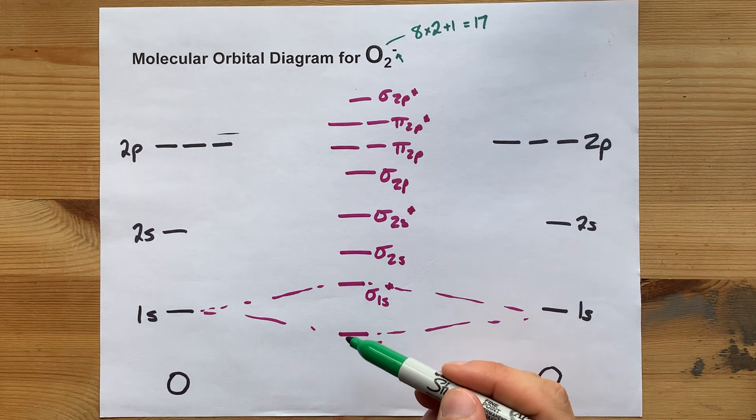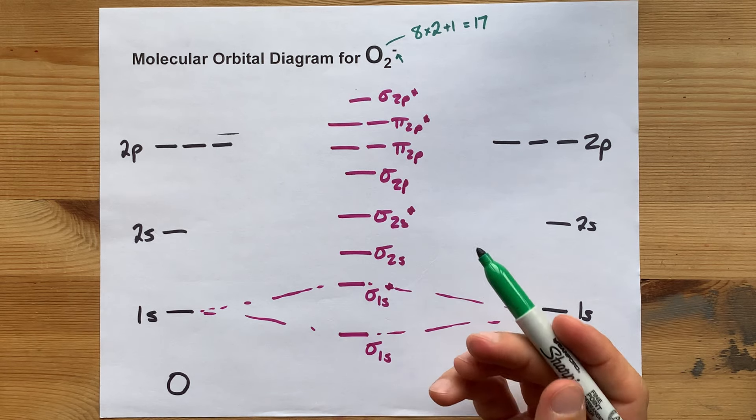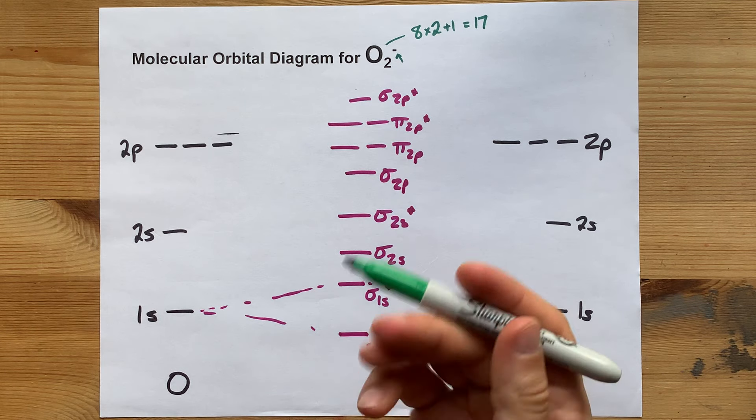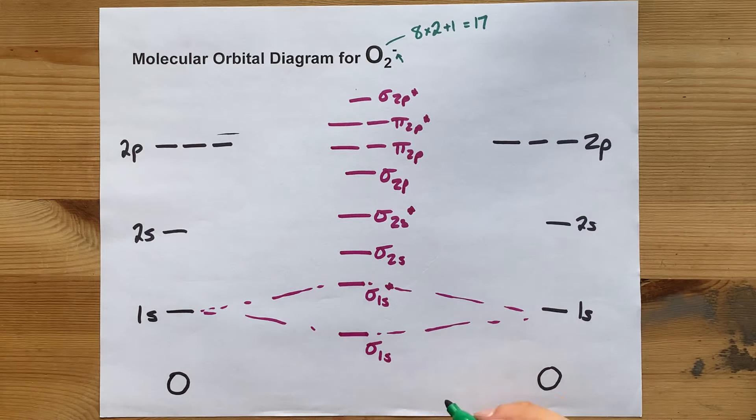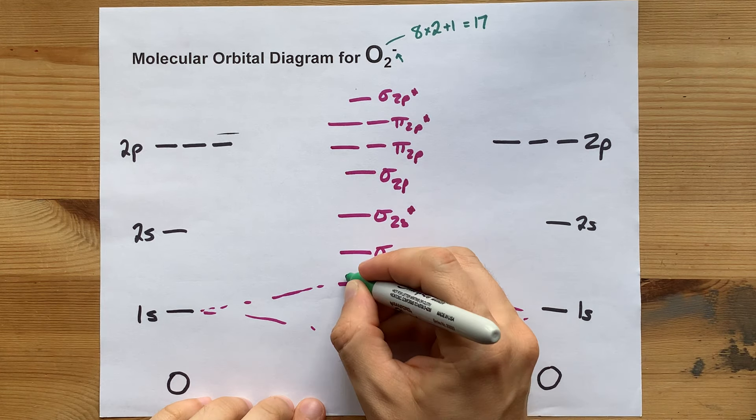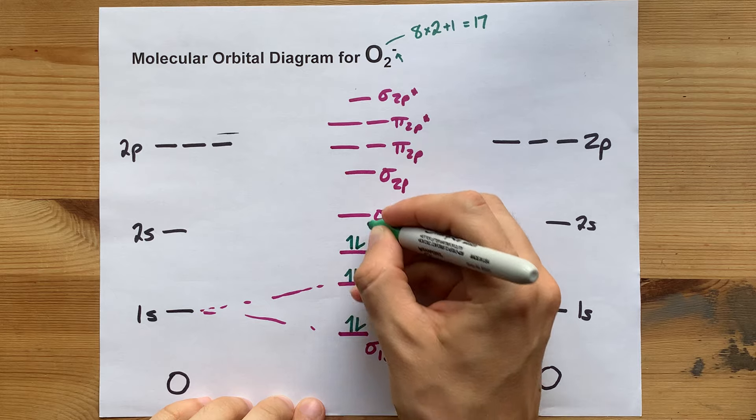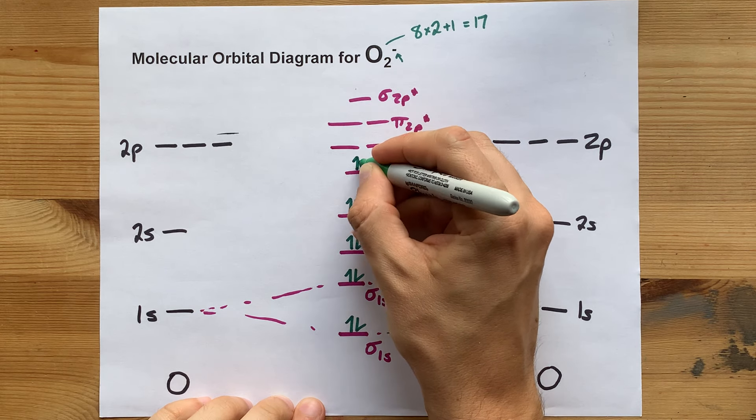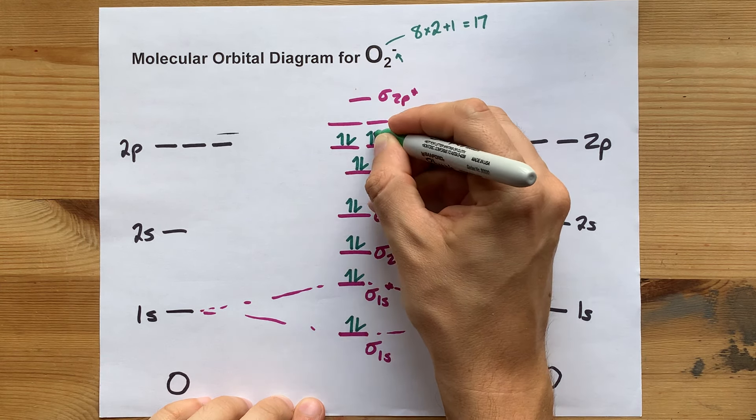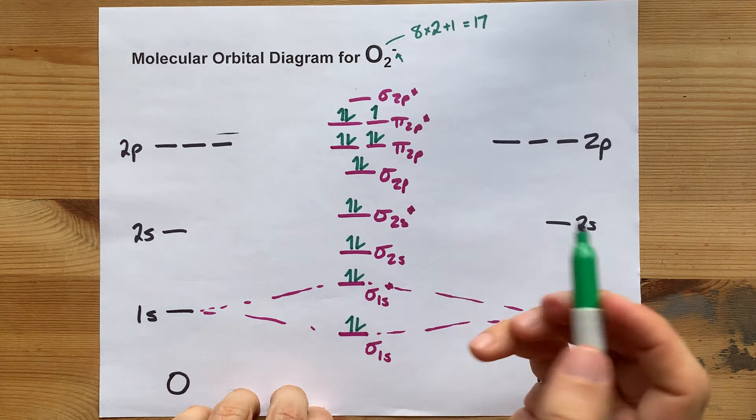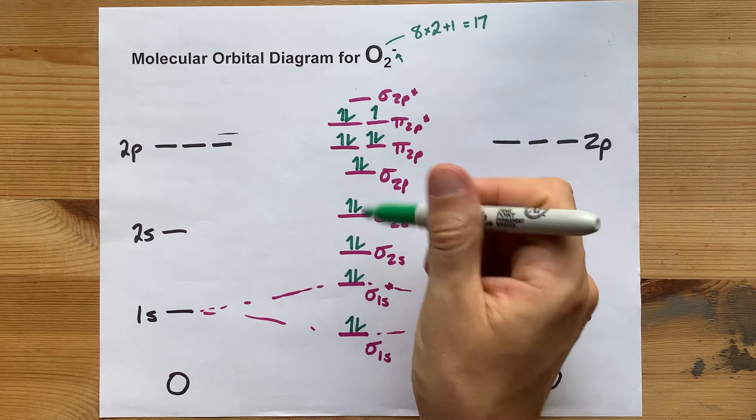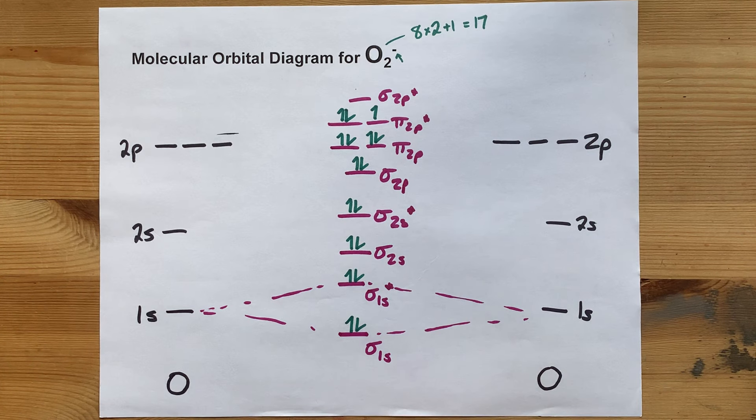Your job is to fill this from the bottom up. What is that, the Aufbau principle. And you need 17 electrons total. 1, 2, 3, 4, 5, 6, 7, 8, 9, 10, 11, 12, 13, 14, 15, 16, 17. Notice how I spread them out before I doubled them up. That's Hund's rule.